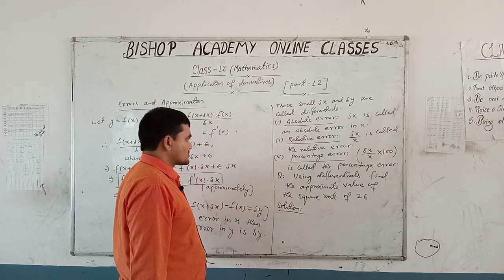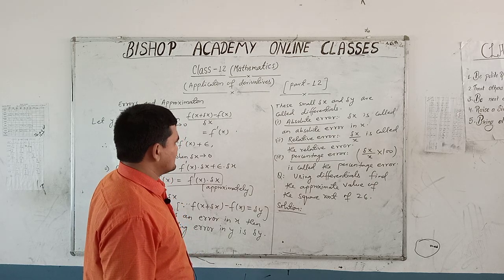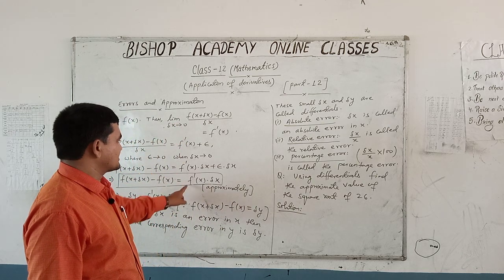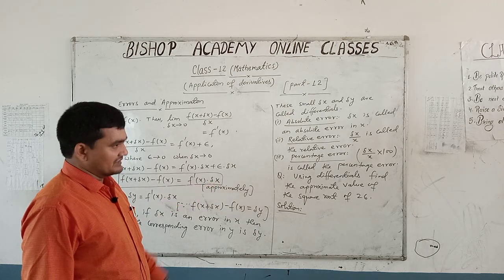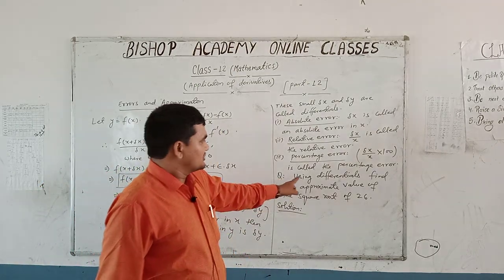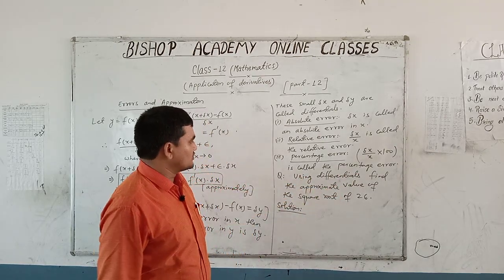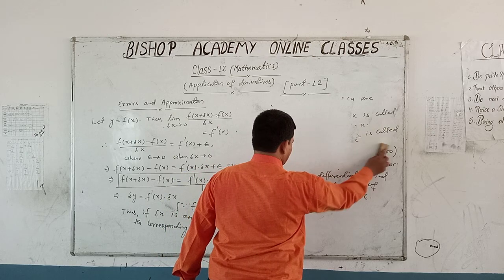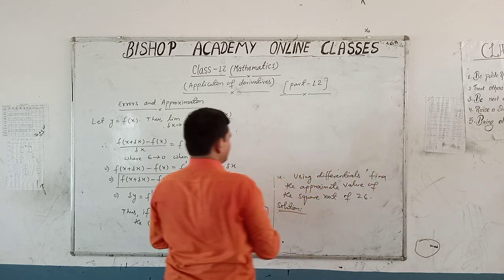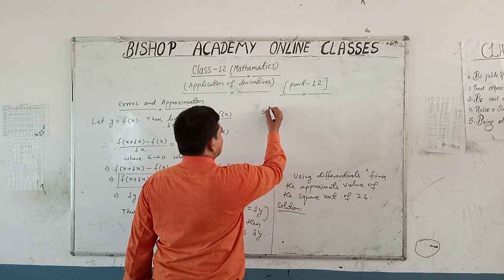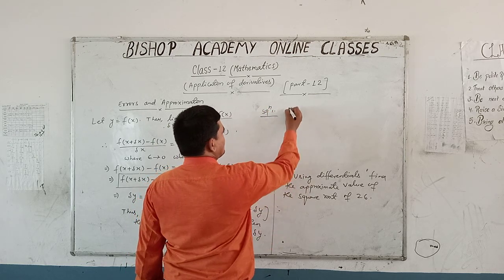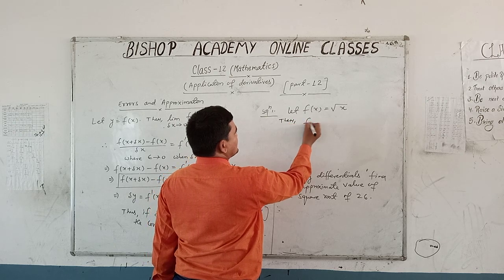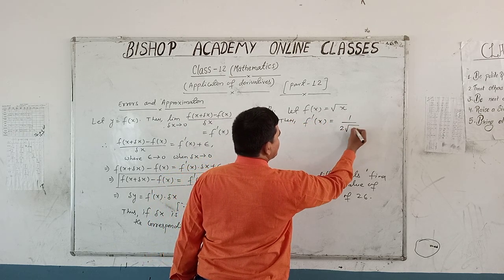Now we will solve a question based on error and approximation. We use the formula f(x + delta x) minus f(x) equals f'(x) into delta x. The question is: using differentials, find the approximate value of the square root of 26. Let f(x) equal to root x, then f'(x) equals 1 upon 2 root x.